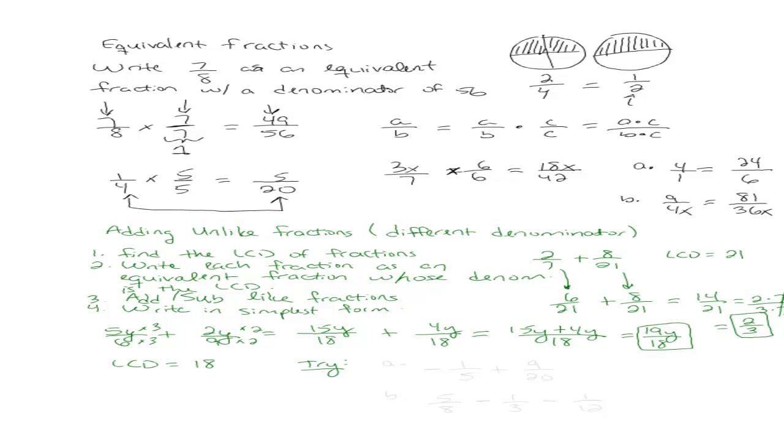So now I want you to try negative 1/5 plus 9 over 20, and B, 5/8 minus 1/3 minus 1 over 12.